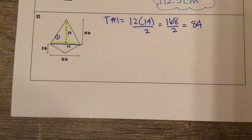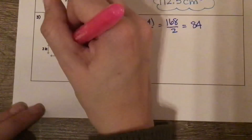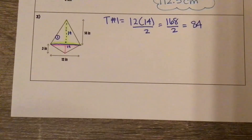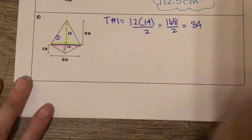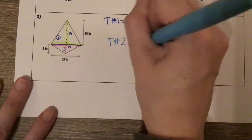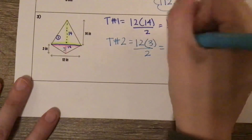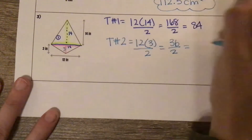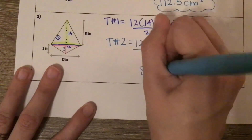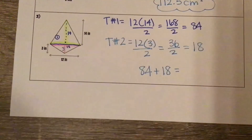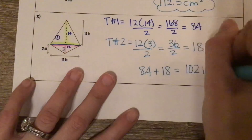Do the same thing for triangle number 2. We have the same base going across and then a perpendicular height. The base is still 12 and the height is 3. Triangle number 2 is a base of 12 times a height of 3 divided by 2 — 12 times 3 is 36 divided by 2 is 18. So our total area, taking 84 plus 18, gives a total area of 102 inches squared.